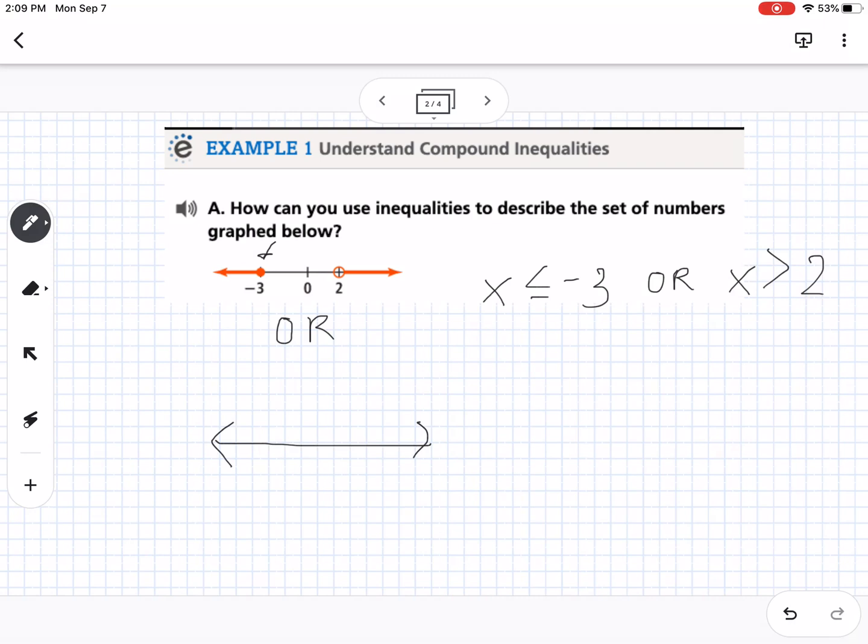So now let's do a different type. Let's say I have negative four and one and closed dot on negative four, open dot on negative one, and shaded in between. So notice the difference between this number line and the one up above.